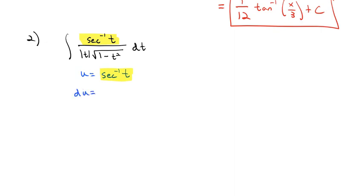U is secant inverse. And then we can calculate our du, which is the derivative of secant inverse, which you remember is dt divided by the absolute value of t times the square root of 1 minus t squared. And fortunately, all of that already sits in my function. So this is going to clean up really nicely. The secant inverse of t becomes just u, and the dt over the absolute value of t times the square root becomes our du.